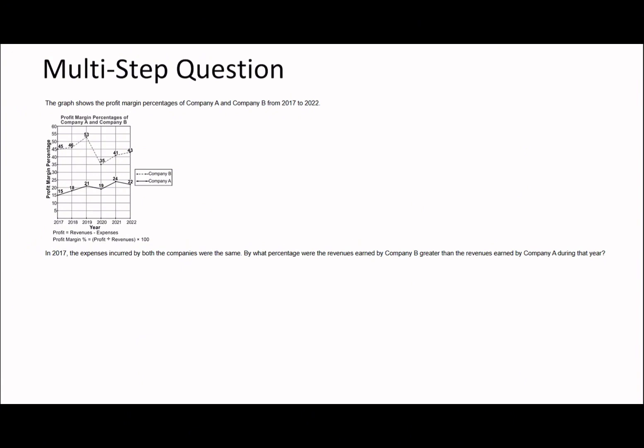Let's go on to the next question. See if you can try this one using some of the ideas and logic we've covered. This next one is a little bit tricky. In 2017 the expenses incurred by both companies are the same. By what percentage were the revenues earned by company B greater than the revenues earned by company A during that year?